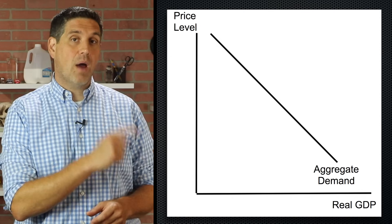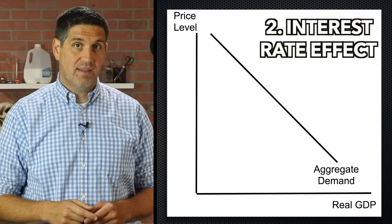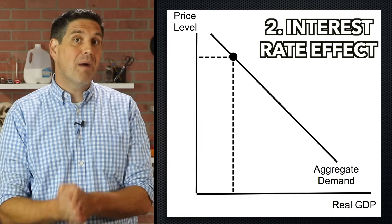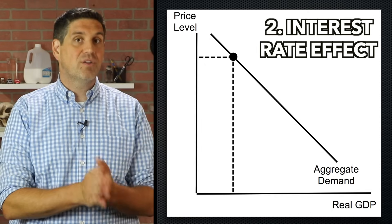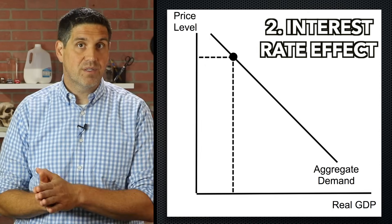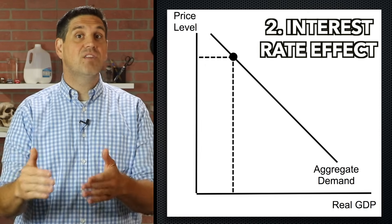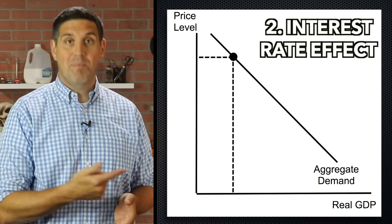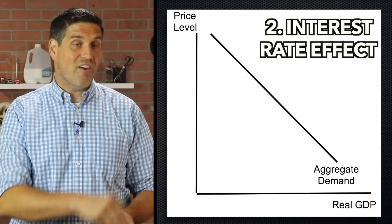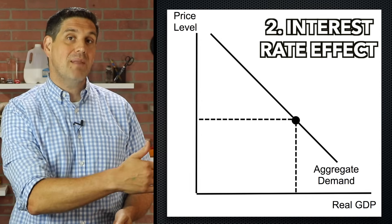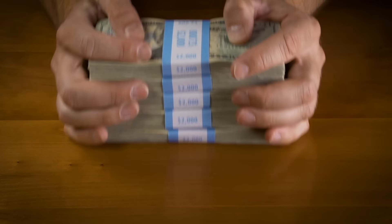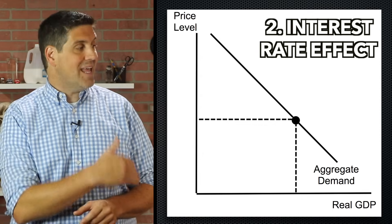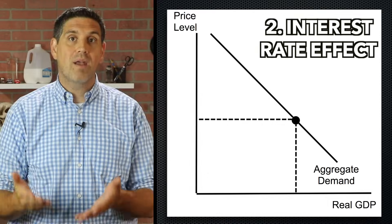The second reason why aggregate demand is downward sloping is the interest rate effect. When price level goes up, people buy less but they also save less, which means less money in banks and less money to be lent out to borrowers. This results in higher interest rates and less investment spending, so there's a decrease in the quantity of goods and services demanded. And this goes the other direction as well — if price levels fall, people are going to spend more but also save more. That means there's more money in banks to be lent out to borrowers, so that lowers interest rates and increases investment and the quantity demanded.